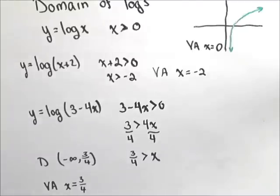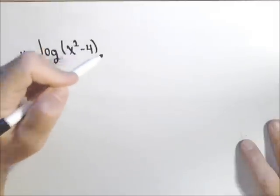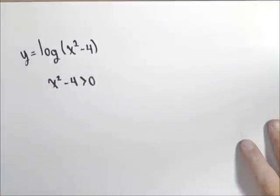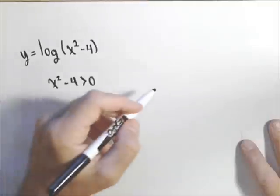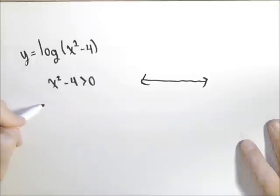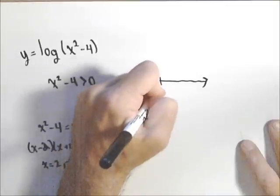Now let's look at a more interesting example where we have a quadratic inside our logarithm and we need to determine the domain. These are logs of any base — I just happen to be doing base ten. Let's say we have log of x squared minus four, and we want to find the domain. We know we need x squared minus four to be greater than zero. We'll figure out where it equals zero: x squared minus four factors into x minus two times x plus two equals zero, giving zeros at x equals two and x equals negative two.